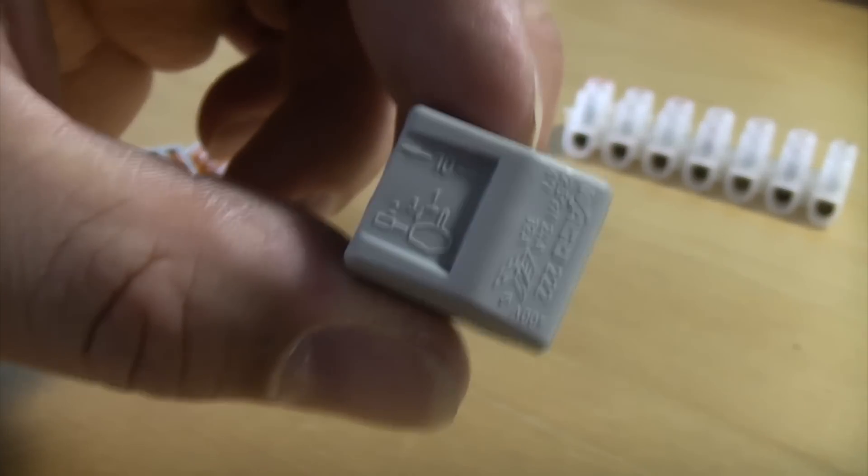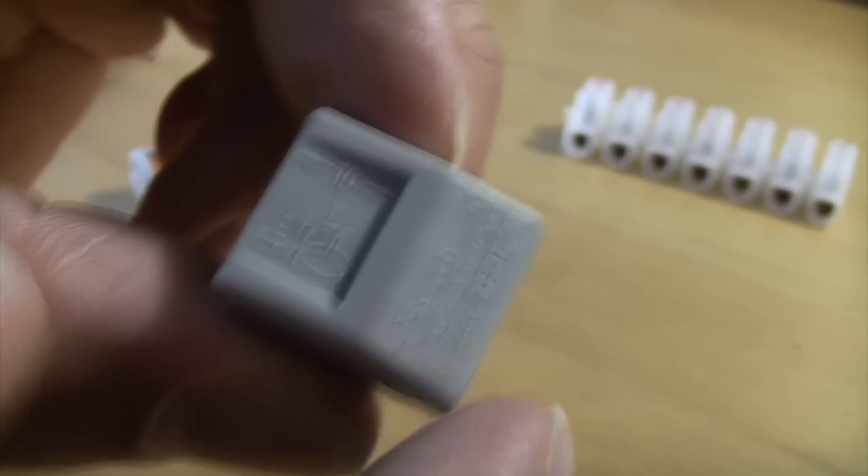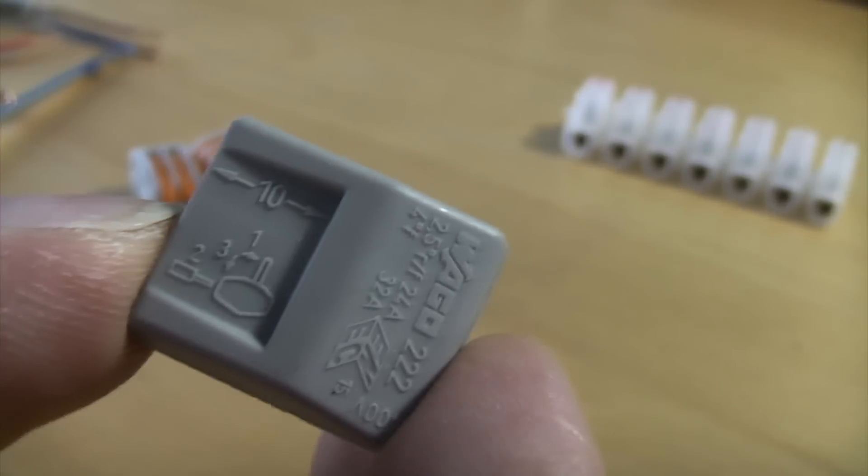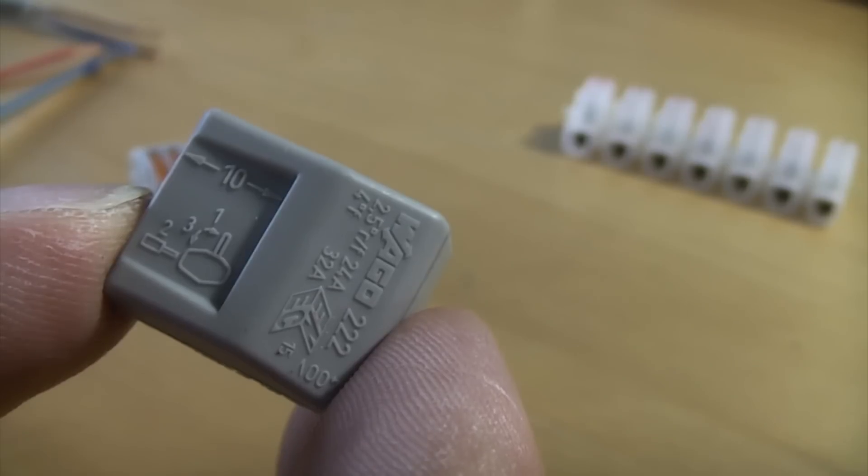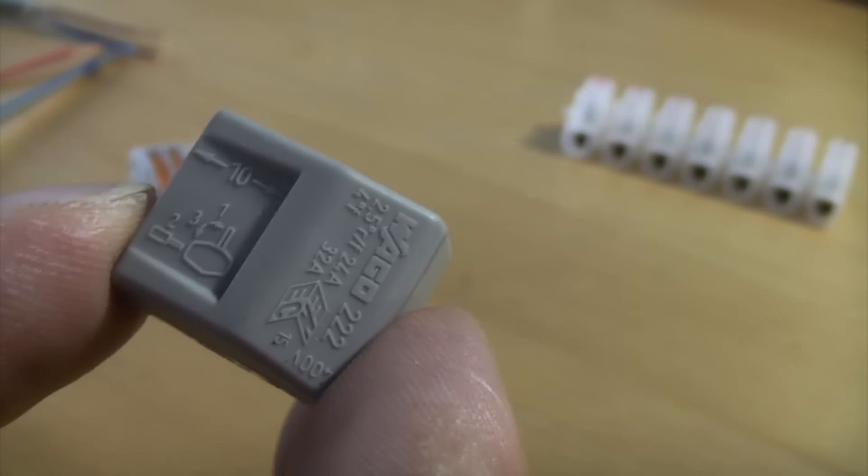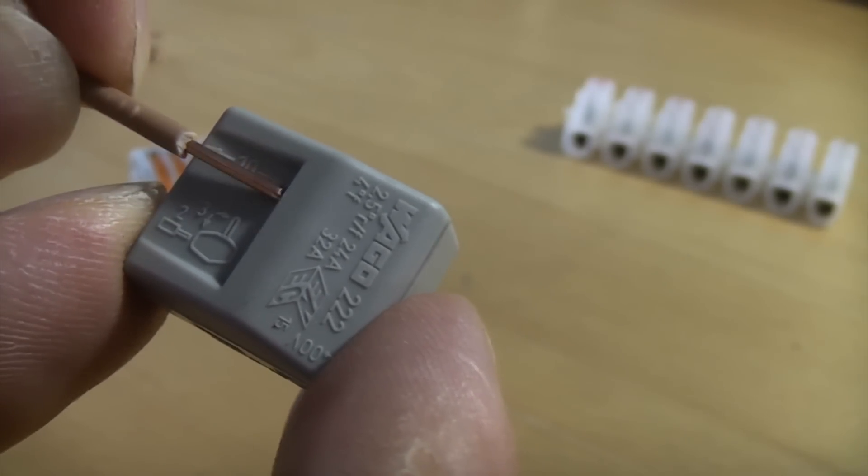If you look on the back of the connector there, you can see a rough guide that tells you how much of the insulation you need to strip off from the conductor, which is 10mm.